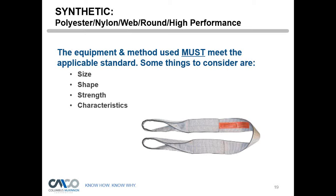The abrasion may not cut the strap on that particular load, but may compromise it on the next load or the one after. Synthetics are also subject to chemicals and UV degradation from sunlight. They're made of polyester and nylon — similar to carpet material — and will deteriorate over time. When a strap starts losing color, that's usually an indication of UV damage. You don't have to stop using synthetic straps, but when you're done, put them away and get them out of the sunlight.